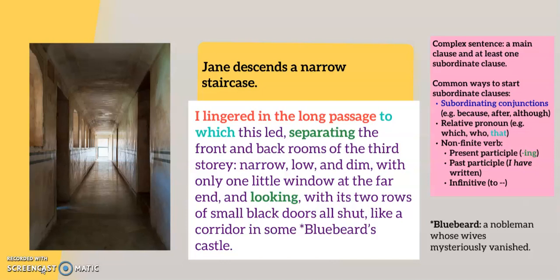Bluebeard is a character in a fairy story whose wives mysteriously vanished. Step two: find the main clause. Here it is, at the beginning. Brontë deliberately positions it first because the subordinate clauses that follow mirror Jane taking in her surroundings one detail at a time. The pace is quite slow. The reference to Bluebeard at the end has been deliberately placed there because it is important.